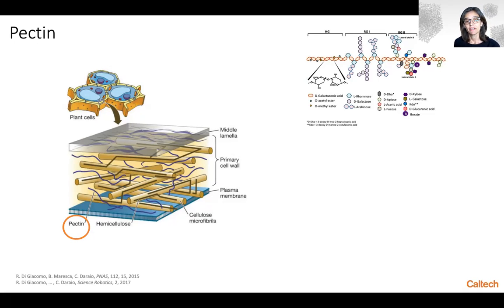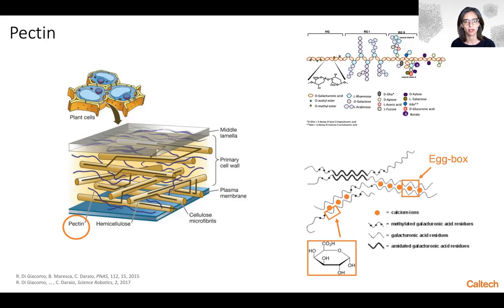However, this type of polyelectrolyte turns out to be a very particular polymer structure which hides its secret temperature responsivity in the backbone. The backbone of galacturonic acid is characterized by an egg box structure that you see depicted in this schematic diagram.